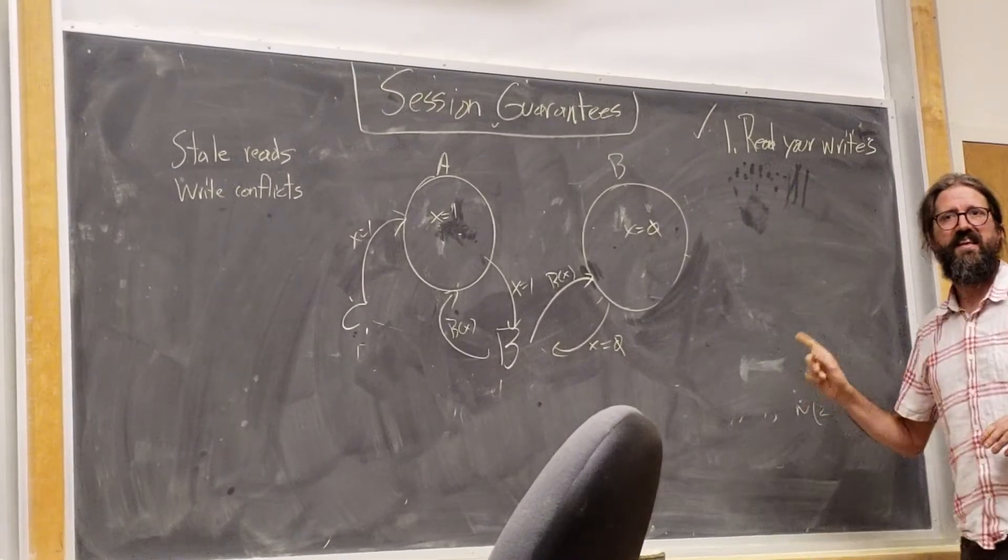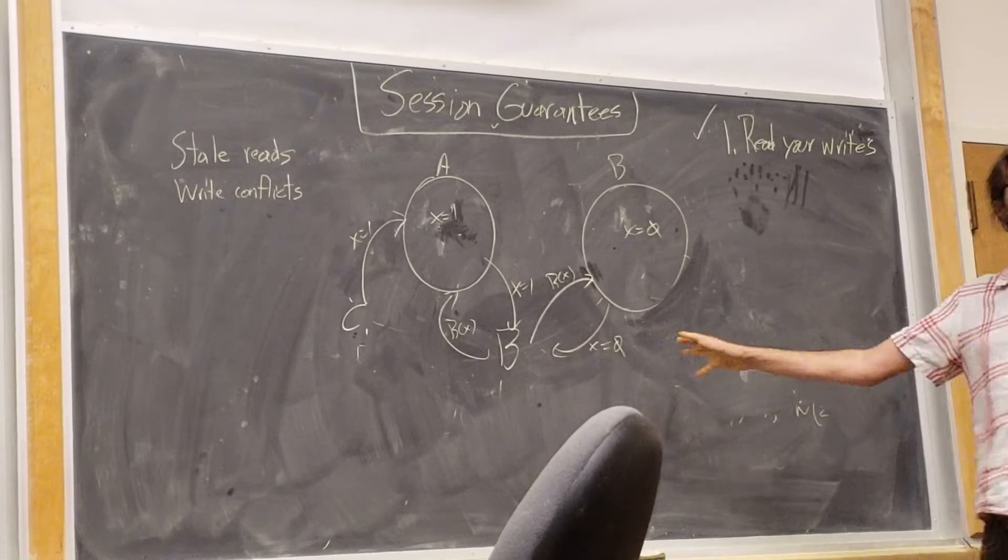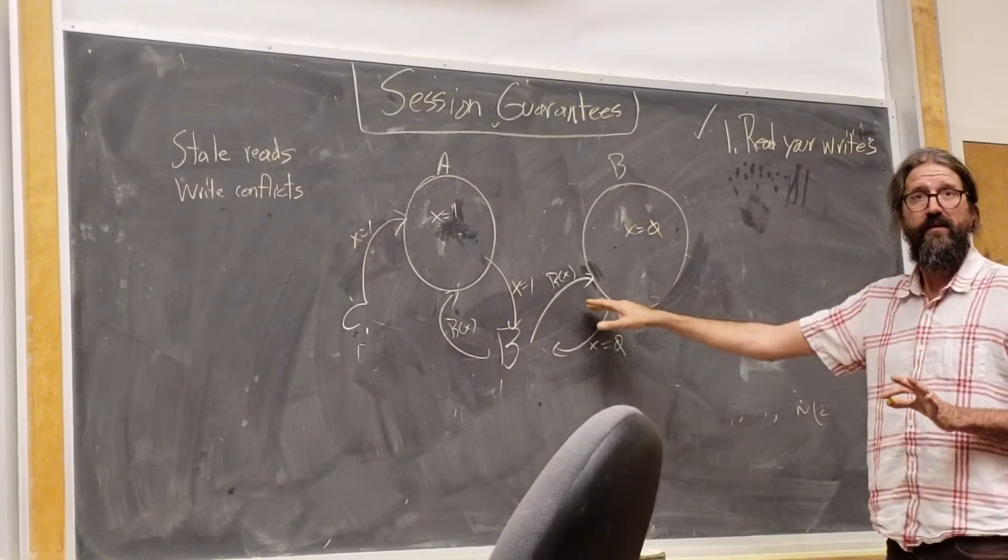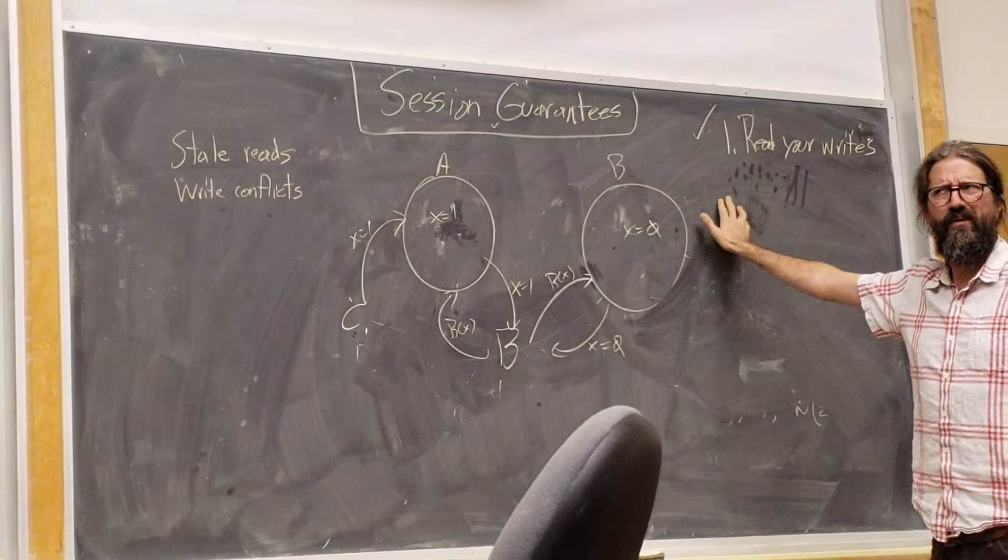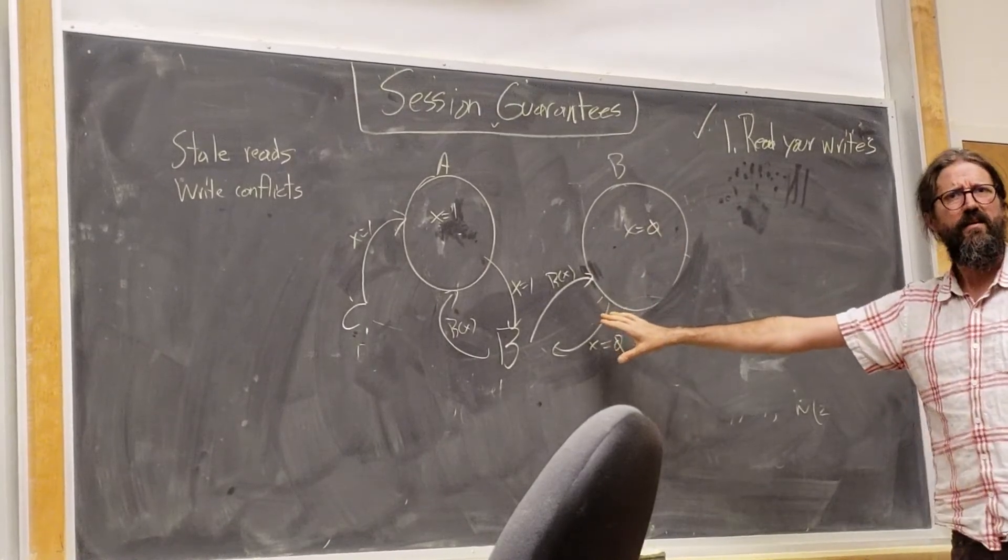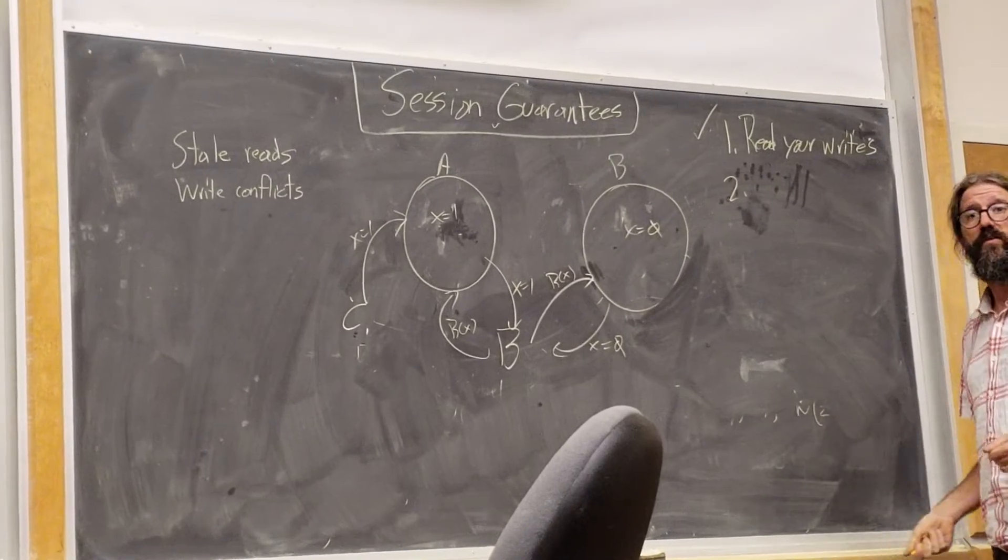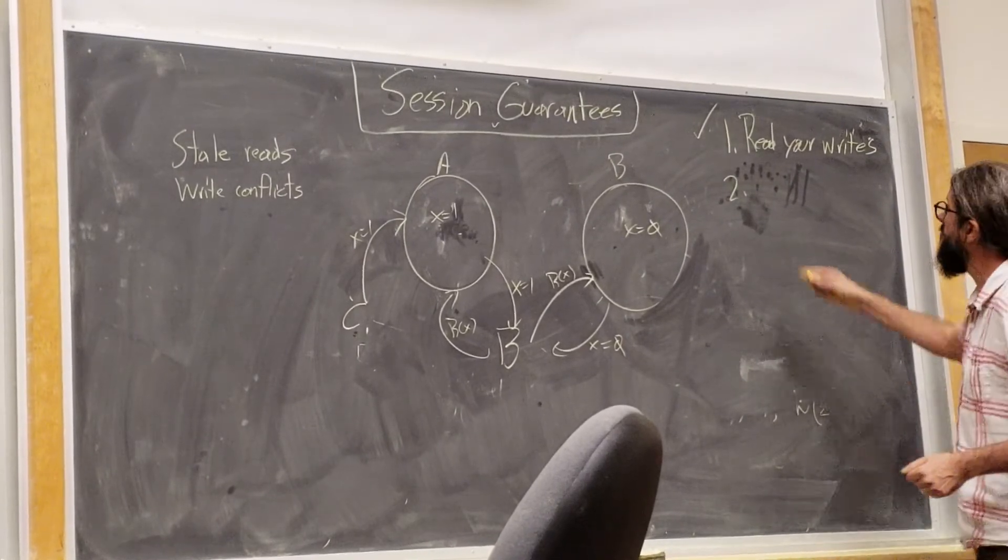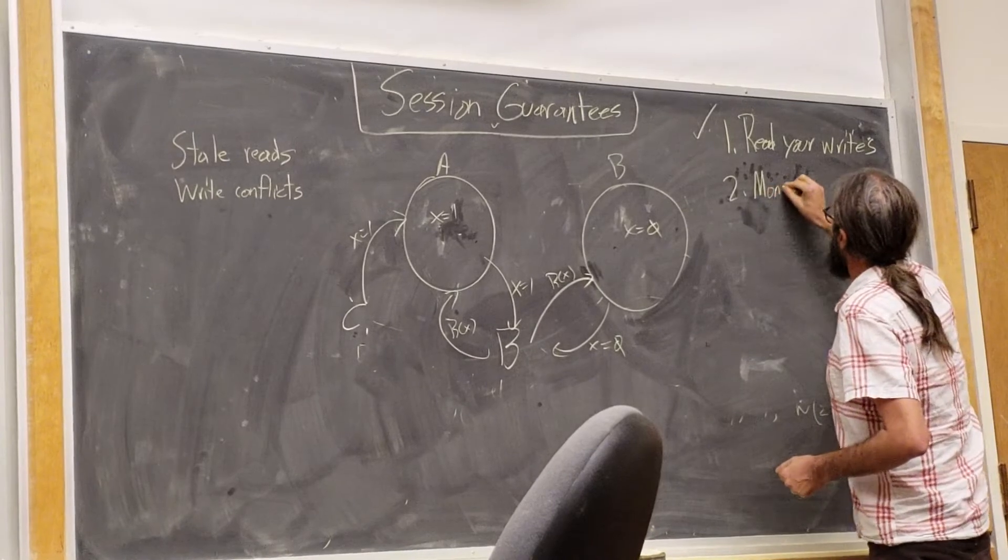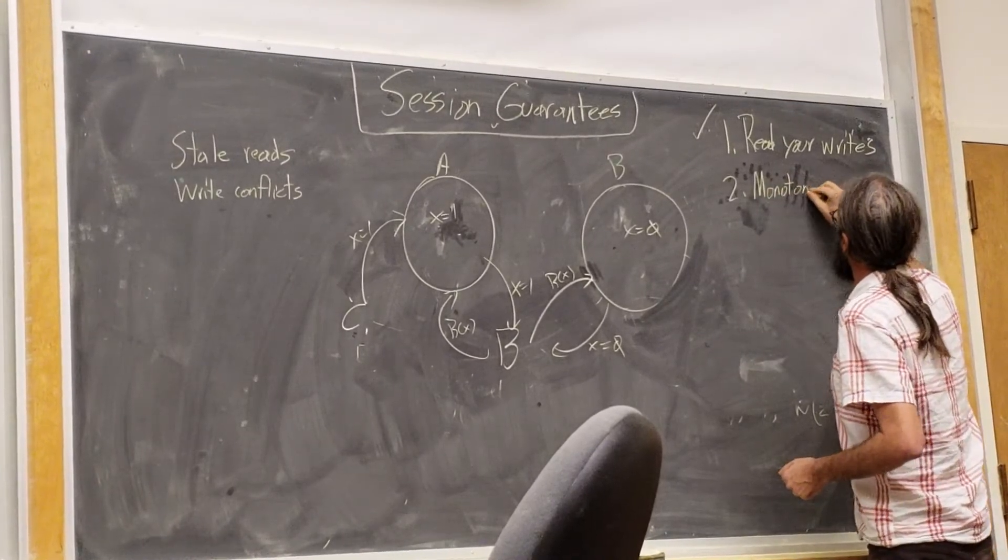For similar reasons to why the other thing wasn't good. Unfortunately, read your writes isn't going to get you there. This is a different session guarantee. This is an anomaly to some other guarantee that we think we would like to have in a world that is sane. An anomaly that's ruled out by causal consistency but doesn't necessarily need the full power of causal consistency to rule out. An anomaly that we might call monotonic reads.